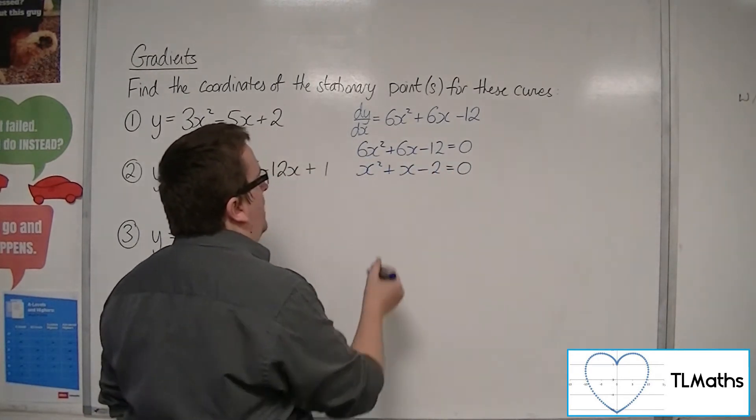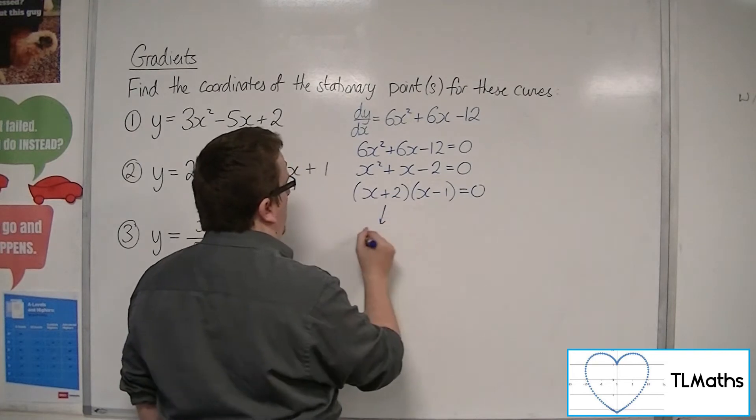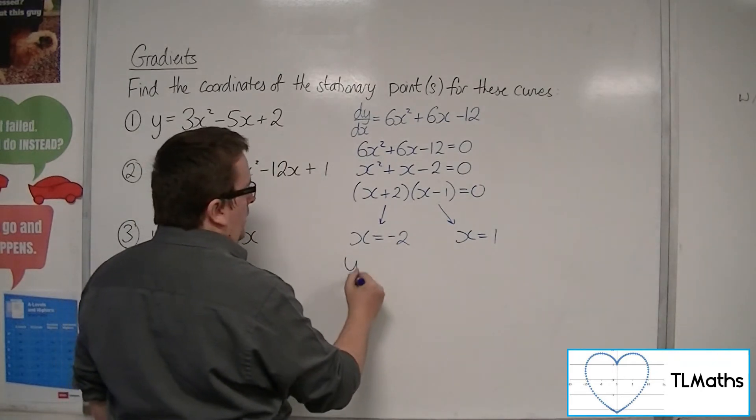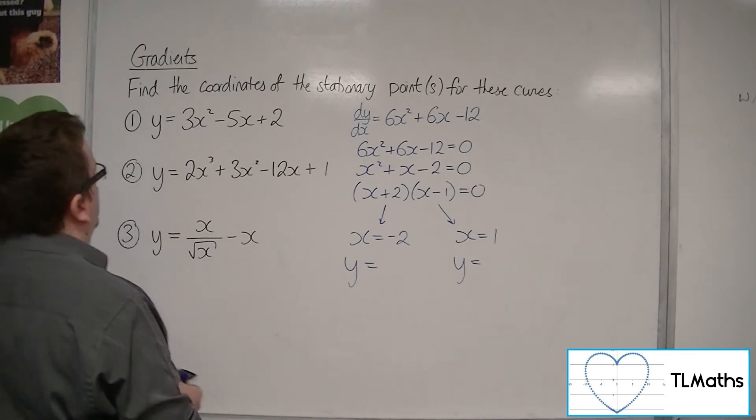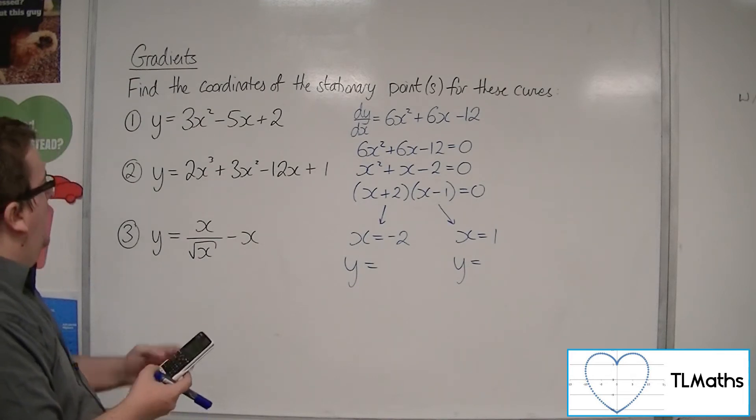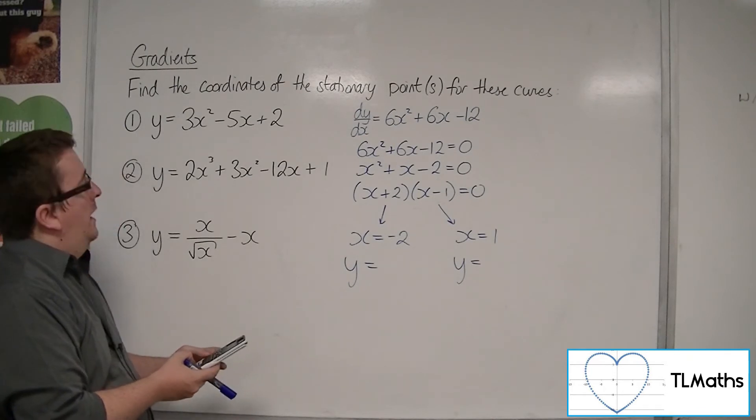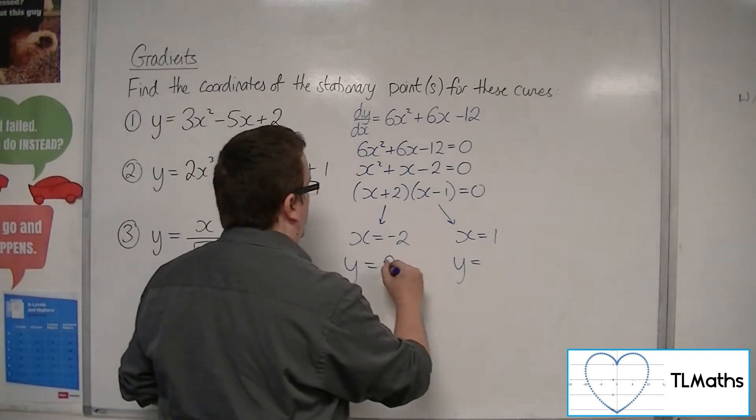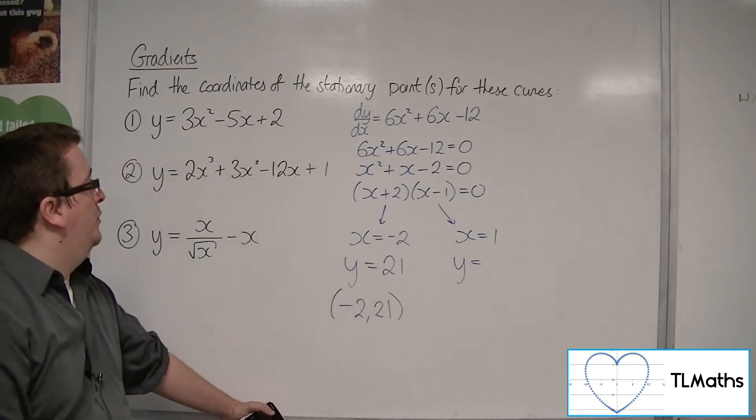So this is a quadratic that we can factorize to get x plus 2, x minus 1. So either x is equal to minus 2 or x is equal to 1. For both of those, we can substitute in to get y values. So we've got 2 lots of minus 2 cubed plus 3 lots of minus 2 squared, take away 12 lots of minus 2 plus 1. And that's 21. So minus 2, 21 is one of the stationary points, one of the turning points of this curve.